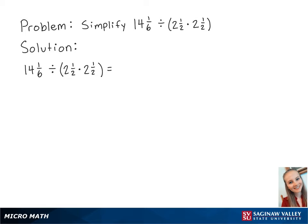For this problem, we're going to simplify 14 and 1 sixth divided by the quantity of 2 and a half times 2 and a half.